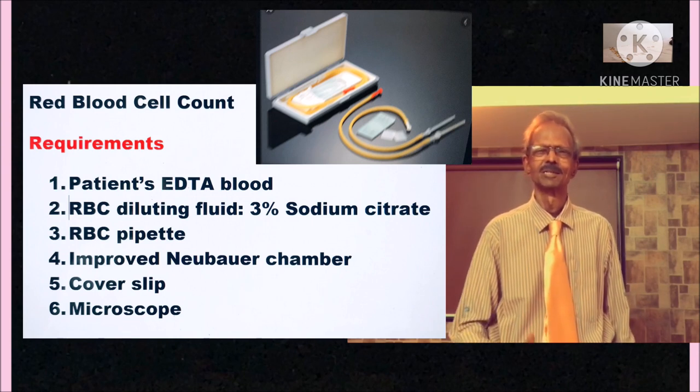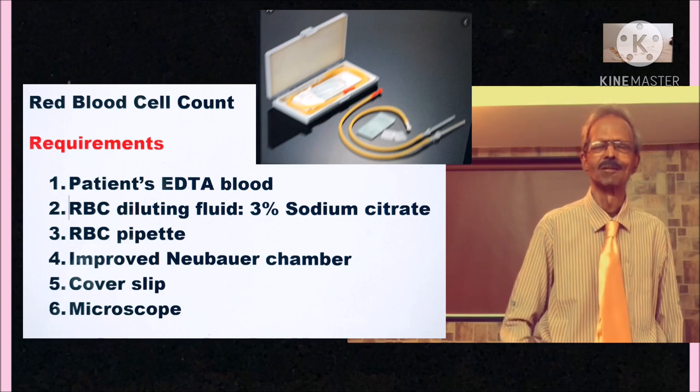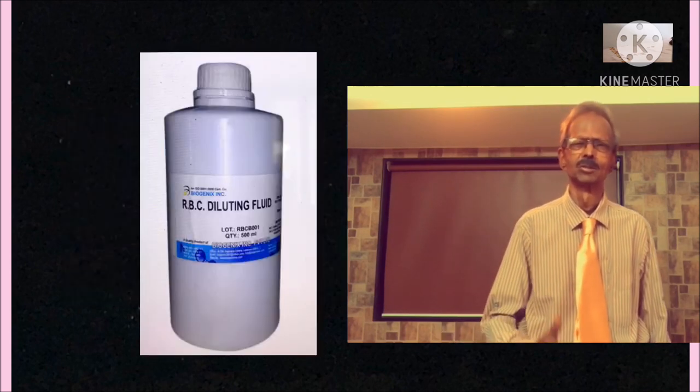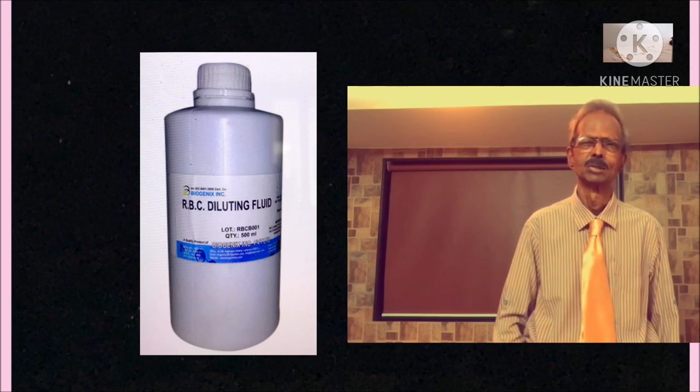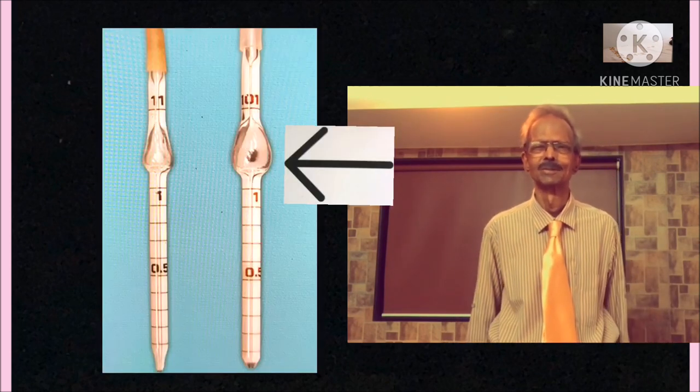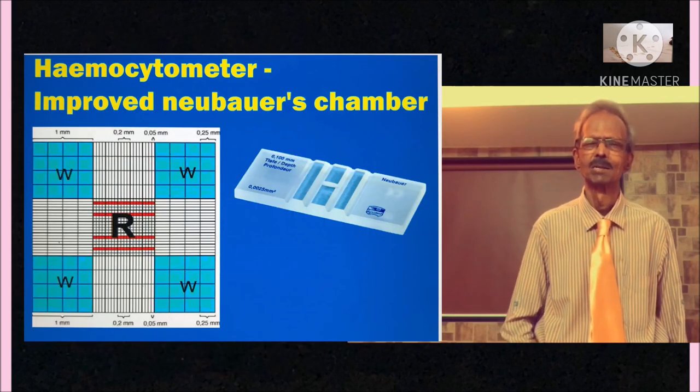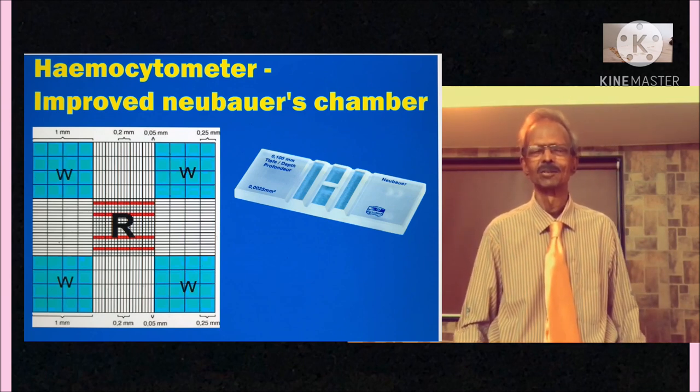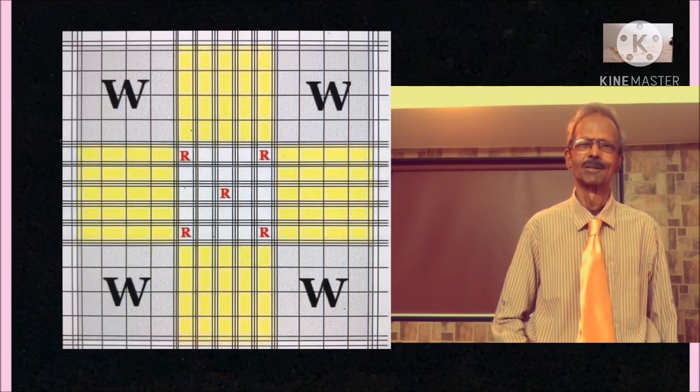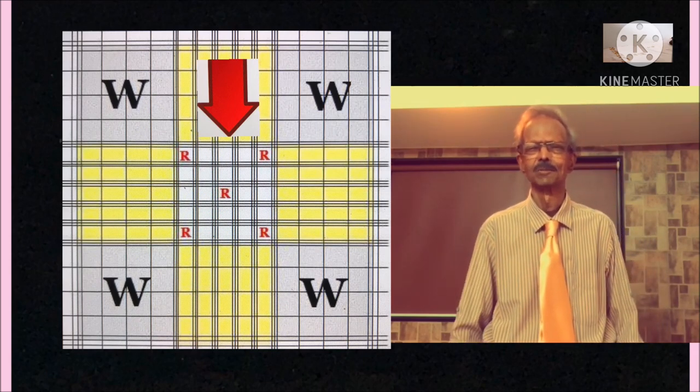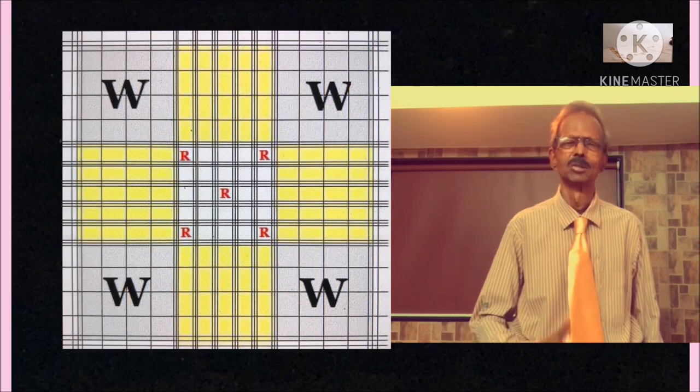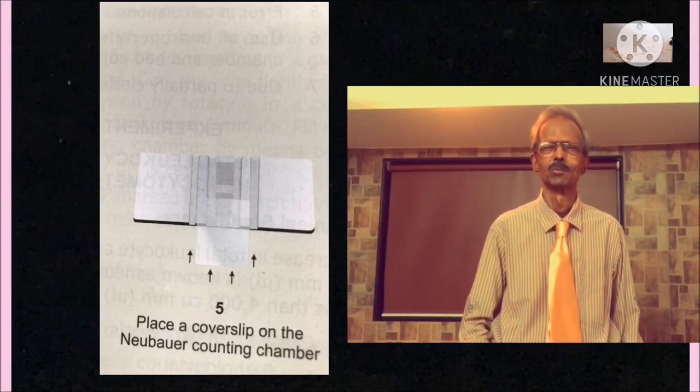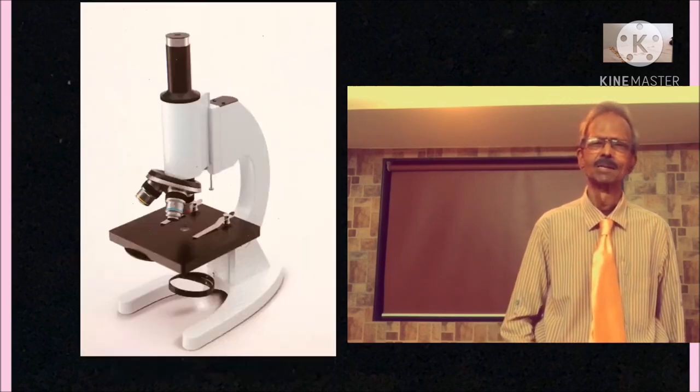Next, experiment is determination of red blood cell count. And requirements are like this: Patient's EDTA blood, RBC diluting fluid i.e. 3% sodium citrate, then a specific RBC pipette, Improved Neubauer chamber. This is very important component of this experiment. And from the designated areas as I have shown on the left hand side, R areas are made for RBC count determination and W means those areas which are made for WBC count. Then a specific cover slip which can be placed on the Neubauer chamber, and a microscope.